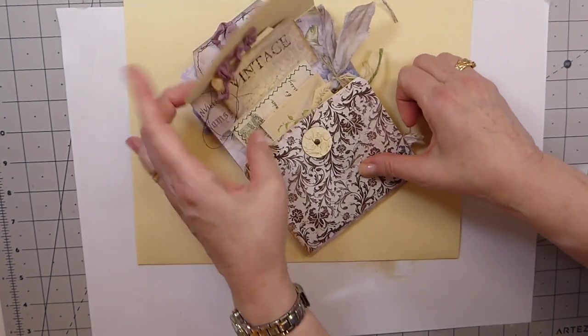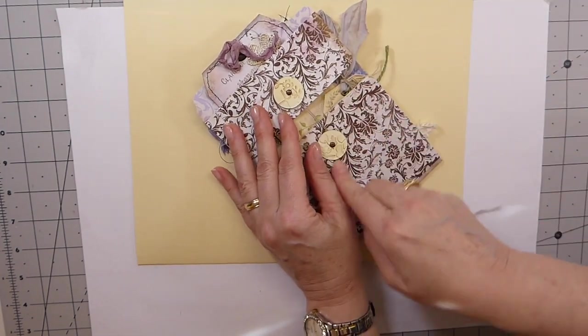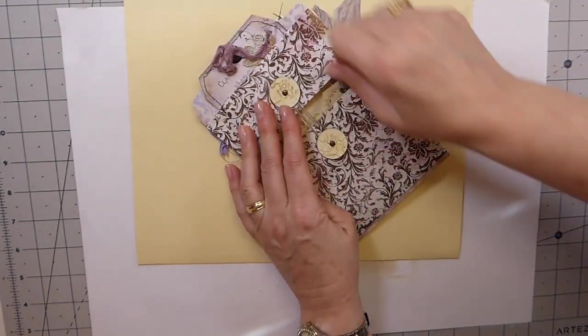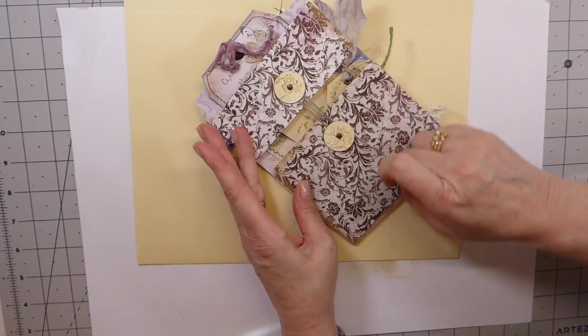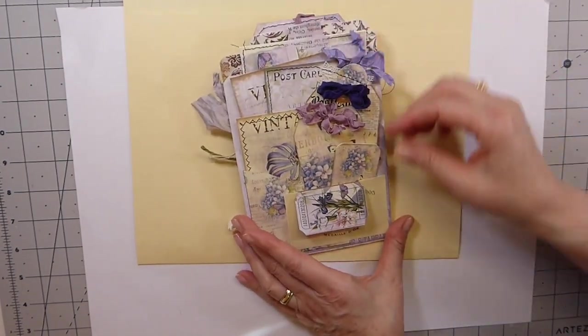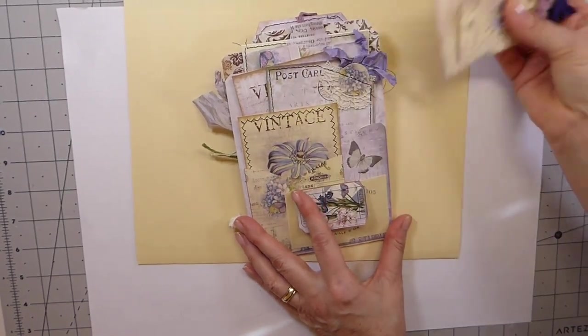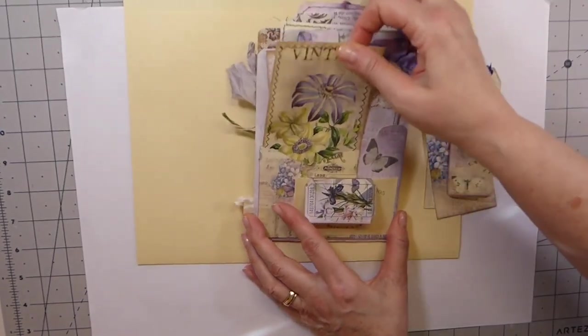So all of this folds up to this side, right, and I've got the little coin closure. And then this flips over and on the back here we've got this pocket that's full of bits and pieces.